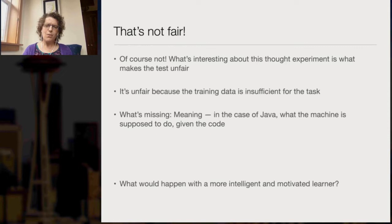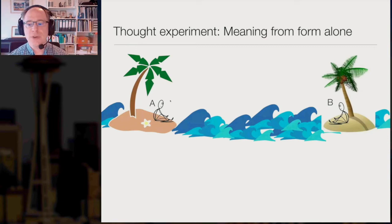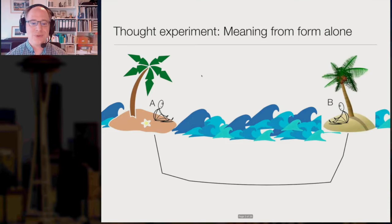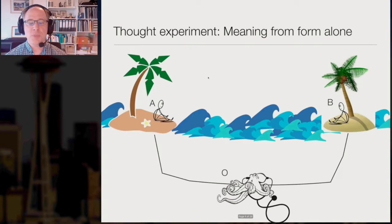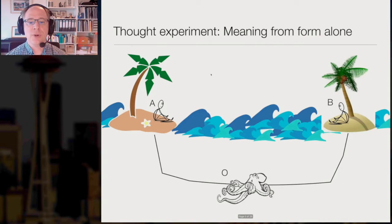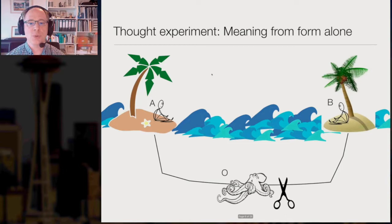Now we turn to our second thought experiment. What would happen if we had a more intelligent and motivated language learner trying to learn a human language? Assume that A and B, both fluent speakers of English, are stranded on two different islands and can talk to each other only through an underwater cable. And O, a deep-sea hyper-intelligent octopus, figures out a way to listen in on these conversations and then performs the most sophisticated statistical analysis you could possibly imagine. At some point, O cuts the underwater cable and inserts himself into the conversation, now talking to A and pretending to be B. The question is: can O successfully deceive A into thinking she's actually talking to a human being?